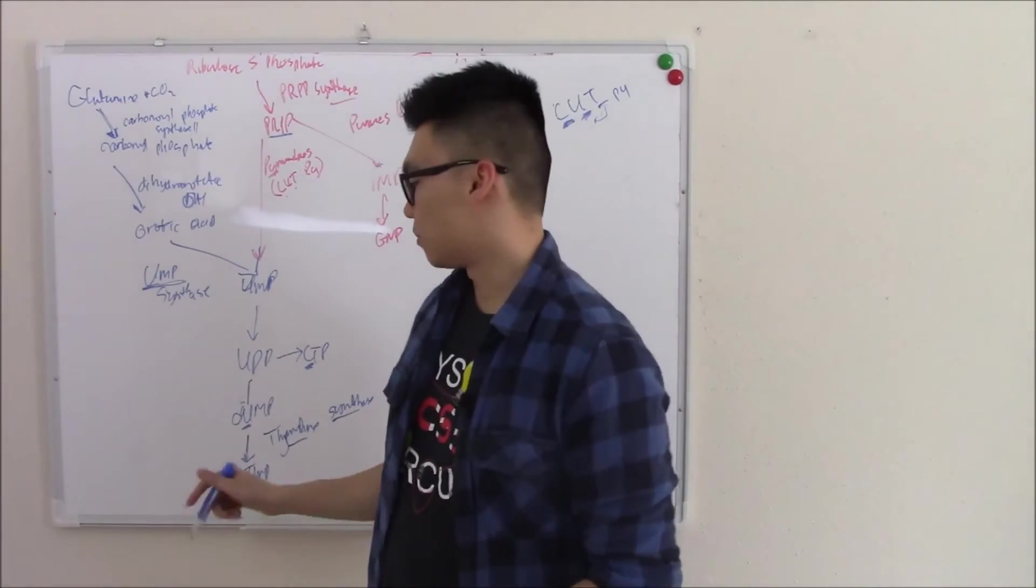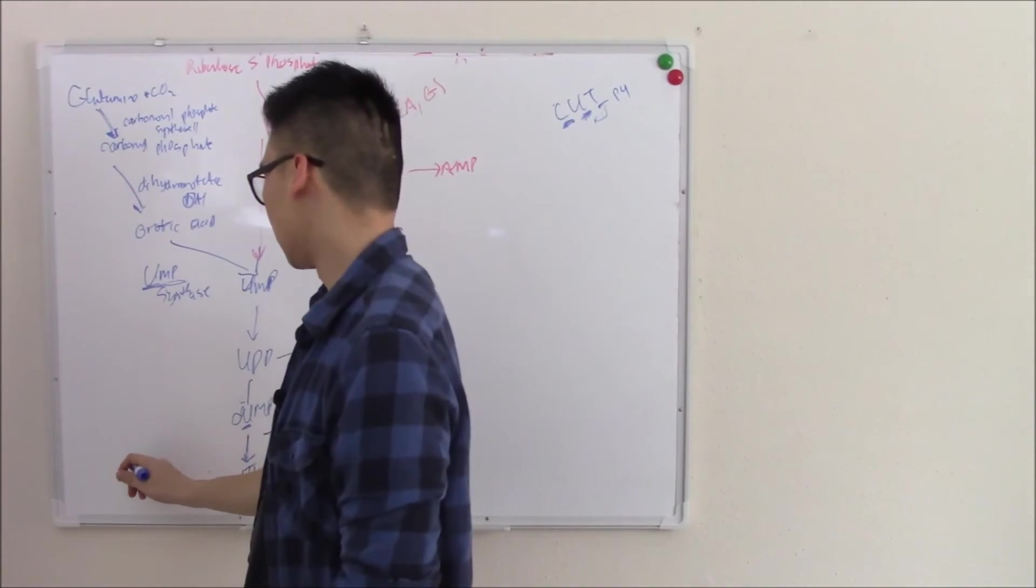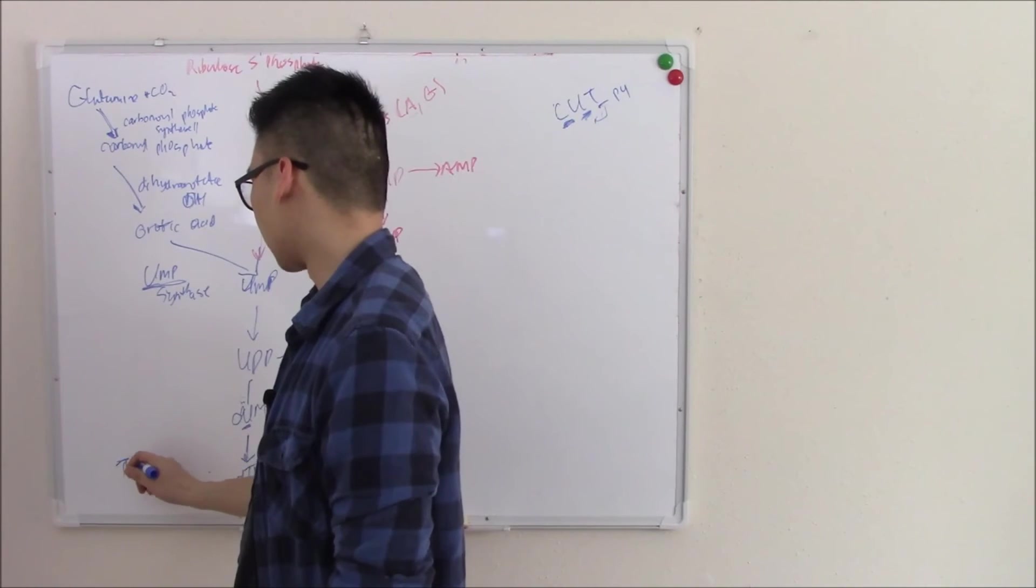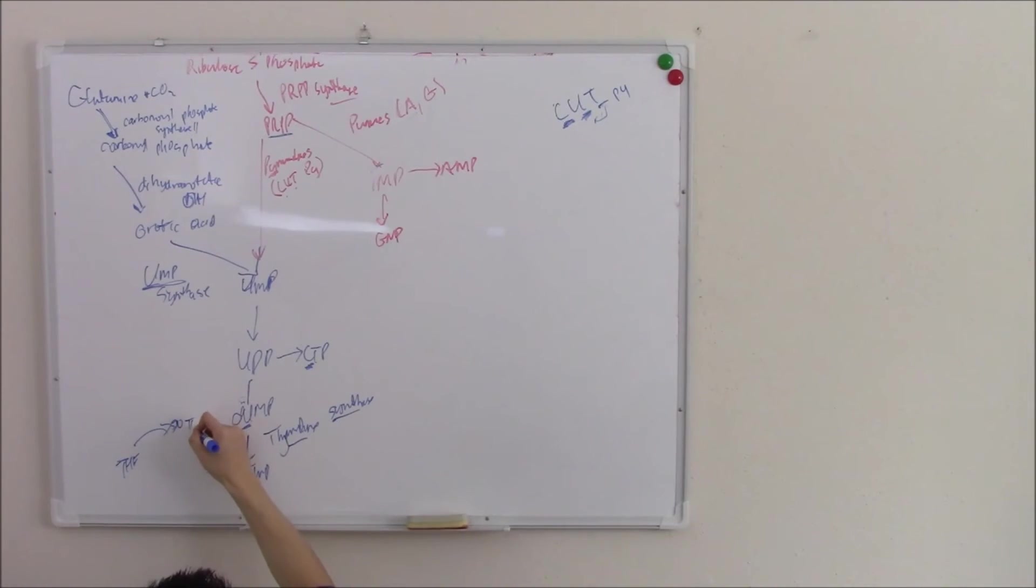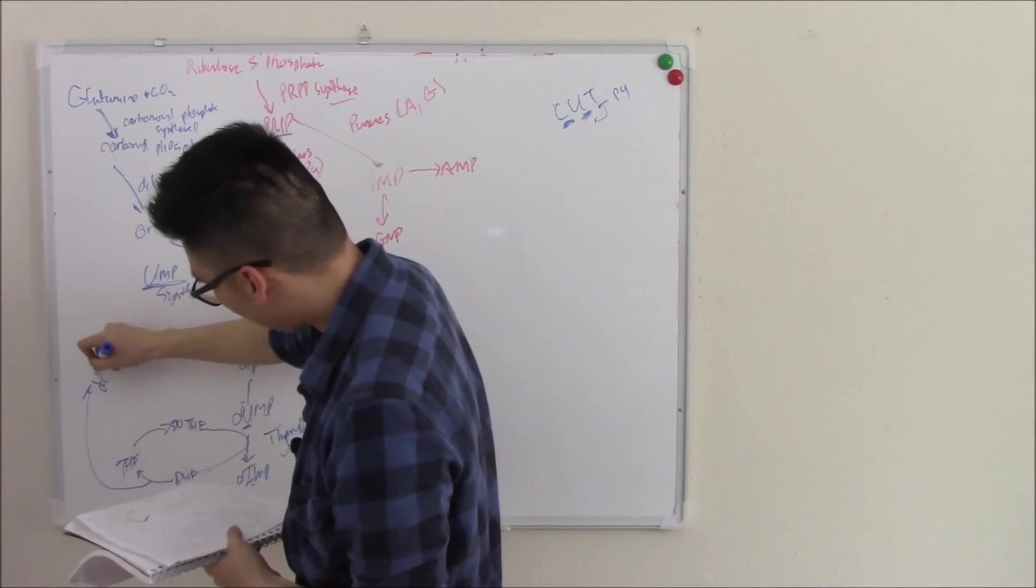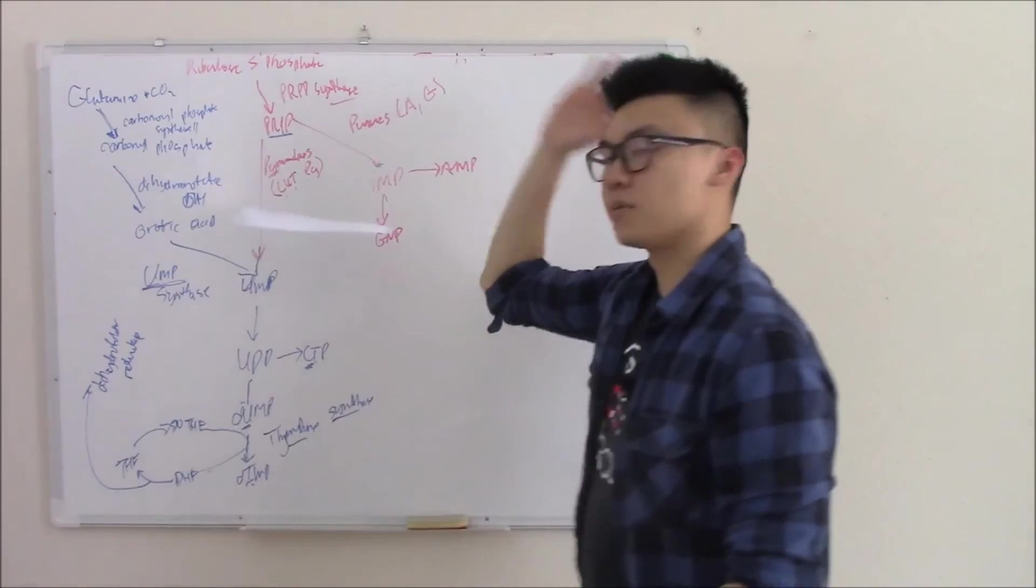The thing that gives us that methyl group is actually found in your diet. That is your folate. Those are in your leafy greens. So eat lots of those. So a form of folate that we see is tetrahydrofolate. That becomes 5,10-methylenetetrahydrofolate. And that is what gives us our methyl group. When it loses a methyl group, it will become dihydrofolate. And that is recycled and re-able to be reused again by an enzyme called dihydrofolate reductase. And that is how you make pyrimidines.